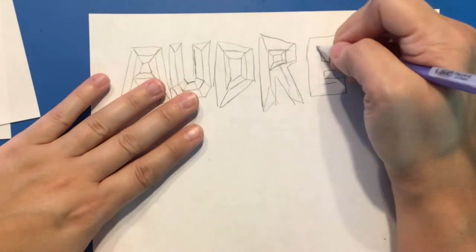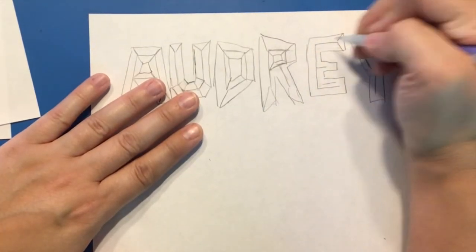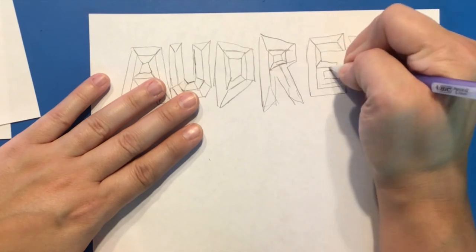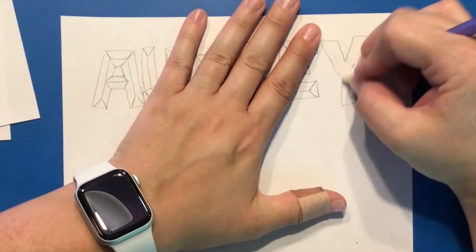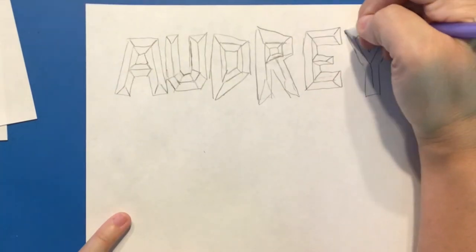Once you have all of your lines in place, then you could choose to do some shading like the original example to help these different sides really stand out.